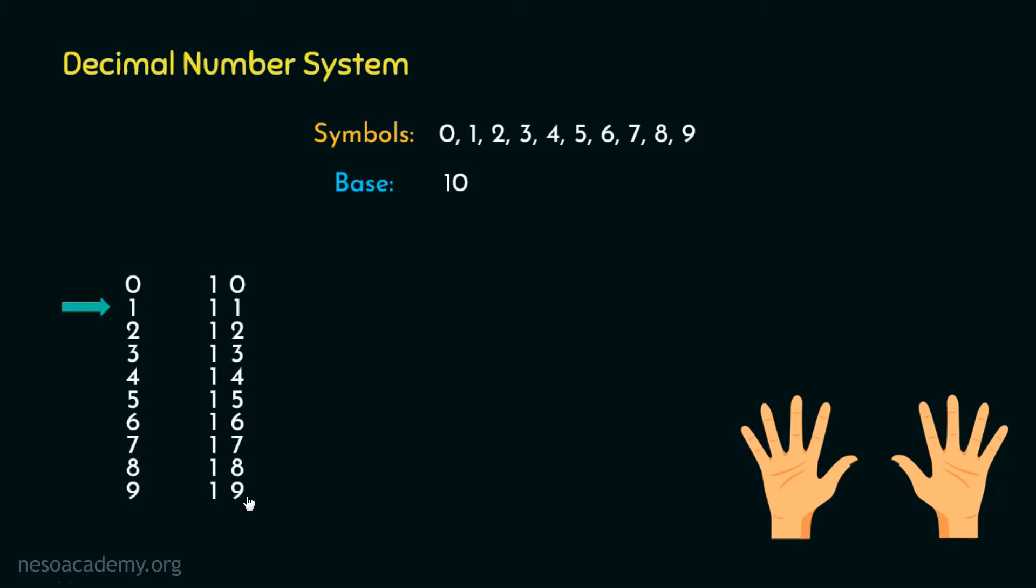Now after 19, in place of 1, we will choose the next symbol in line that is 2 and perform the same drill that we performed with 1. Now all these places where the symbols are changing with the next number every time, we call them the units place. And the places where the symbols are changing after 10 instances, we call them the tens place.